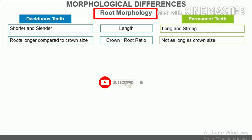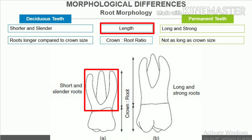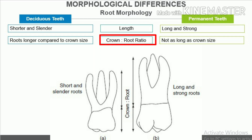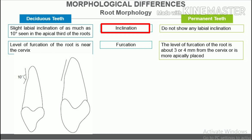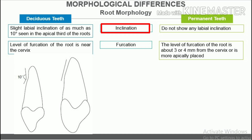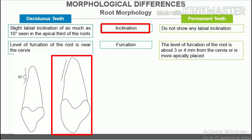Differences in root morphology. Length of root: the roots of deciduous teeth are shorter and slender when compared with permanent teeth; roots of permanent teeth are long and strong. Crown-root ratio: the roots of deciduous teeth are proportionally longer when compared with the crown size, while the roots of permanent teeth are not as long relative to crown size. Inclination of root: there is a slight labial inclination of as much as 10 degrees seen in the apical third of the roots of deciduous anterior teeth; roots of permanent teeth do not show any labial inclination.